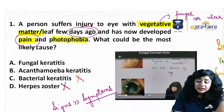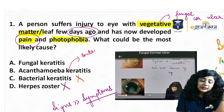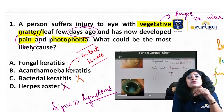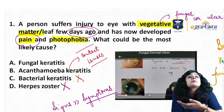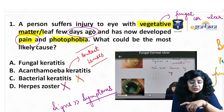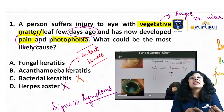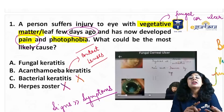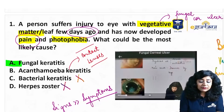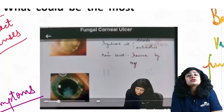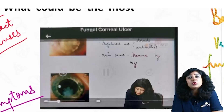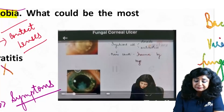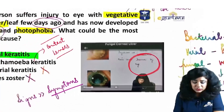However, acanthamoeba keratitis is not the answer here. The most important risk factor for acanthamoeba is contact lens use, and there is no history of contact lens use in this case. Additionally, acanthamoeba keratitis characteristically presents with pain out of proportion to the size of the ulcer, radial keratitis, and ring infiltrate — none of which are mentioned. Therefore, the answer is fungal keratitis. This question was asked directly from our notes and videos.